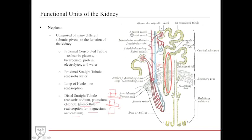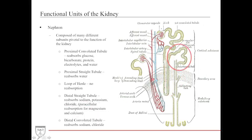If this system is disrupted — by diuretics or ischemic processes — you get pathologic presentations such as edema or electrolyte abnormalities. The last section is the distal convoluted tubule, where sodium and chloride are primarily reabsorbed, and where thiazide diuretics work.